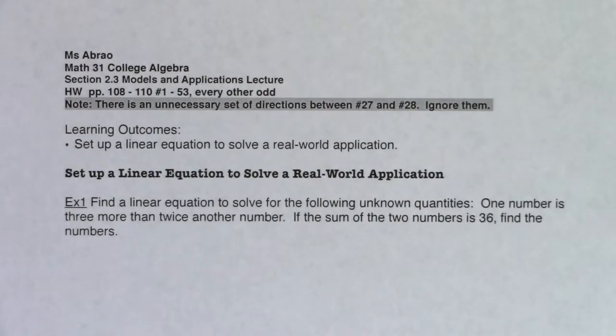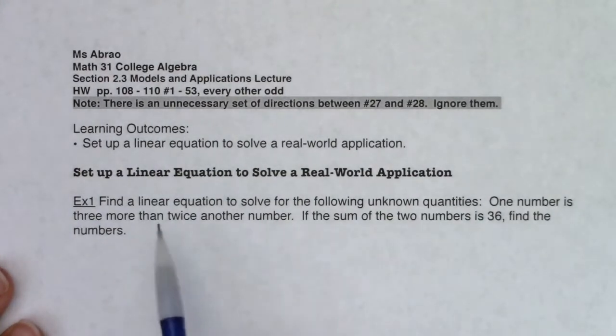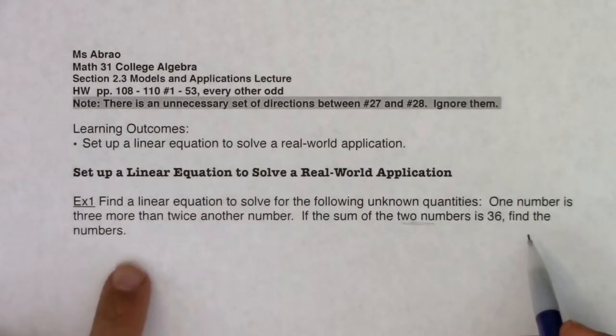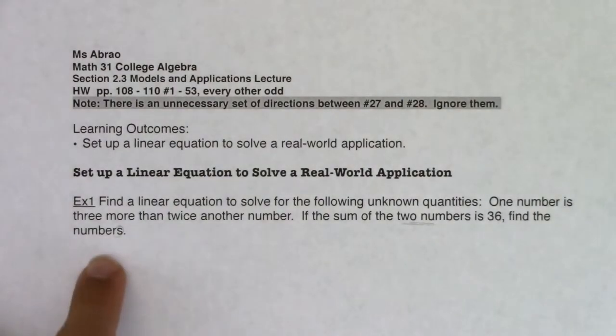It says find a linear equation to solve for the following unknown quantities. First of all, I see quantities is plural, so I just want to think about that. It says one number is three more than twice another number. If the sum of the two numbers is 36, find the numbers. First of all, I can see I have two numbers. It's giving me information that one number is three more than twice another, and the sum of them is 36.